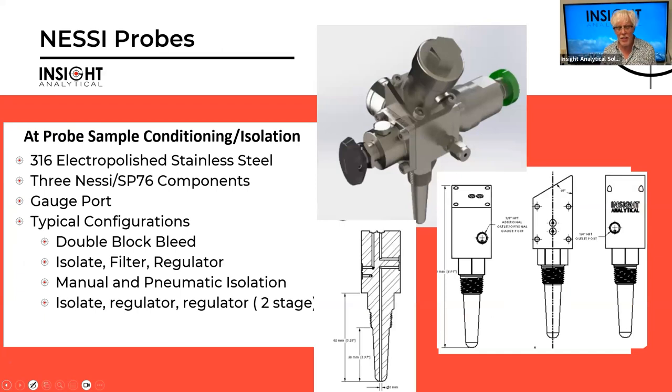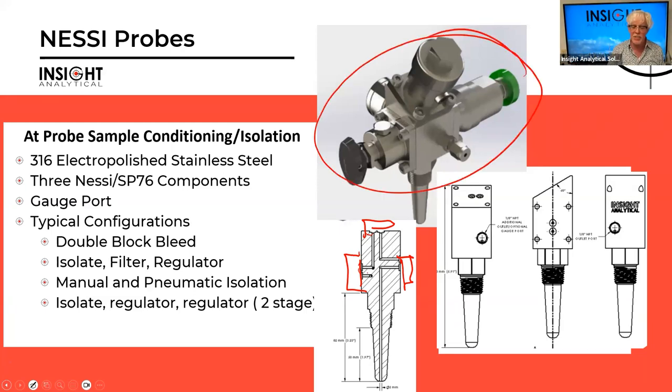We do sample probes that allow us to also mount some of those surface mount components. This is a machined block with a small quill probe. On it, there's places where we can mount up to three Nessi components. These could be two block valves and a bleed valve. They could be isolation valve, filter and regulator, or isolation valve, coalescer and regulator. So all built into that probe assembly. We can sort of do that front end sample conditioning basically right off of the sample probe. There's a pressure port on the side with a gauge, so you know what pressure everything's operating at.